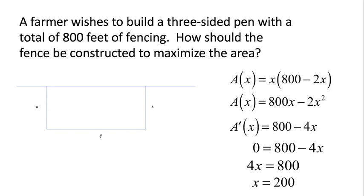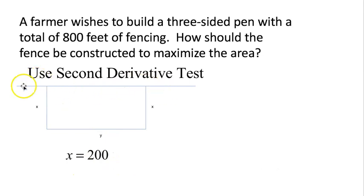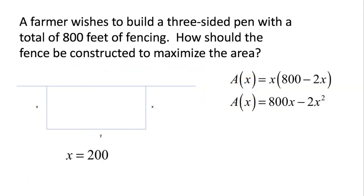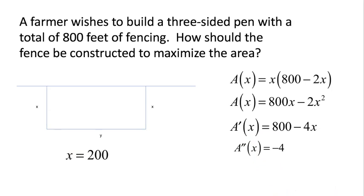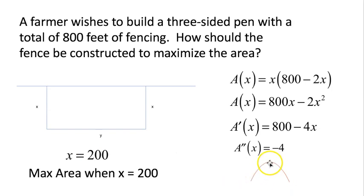Does that give us a maximum value? We need to use some kind of test to determine if our critical value is a minimum or a maximum. Our critical value is 200, and I suggest we use the second derivative test. The second derivative A''(x) is negative 4. Negative 4 means concave down, so we know the value at our critical point is going to be a maximum. By the second derivative test, we have maximum area when x equals 200.